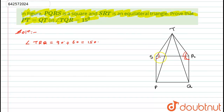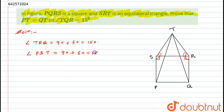Similarly, I will find angle PST. This angle is also a combination of 90 degrees from the square and 60 degrees from the equilateral triangle. So angle PST equals 90 plus 60, which equals 150 degrees. Since both angles have the same measure, angle PST equals angle TRQ. Let this be equation number one.